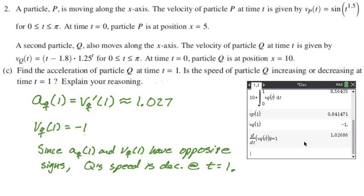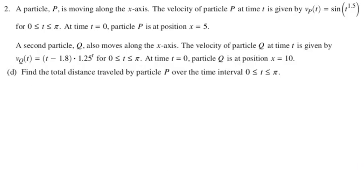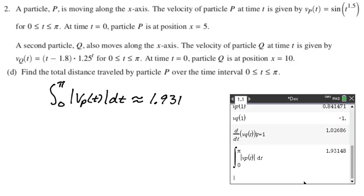All right. There's one more part to this, which is another very traditional part though. Find the total distance traveled by particle P on the time interval from zero to pi. This one is guaranteed calculator. You just do it. So distance traveled is the integral of the absolute value of velocity. So, or the integral of the speed, right? So integral absolute value of velocity from zero to pi, calculator problem. So punch it in. I got 1.931 and here is my work. All right. That is question number two. I hope you found this helpful and good luck.